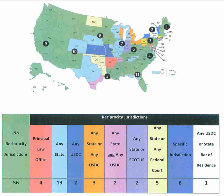Generally, a final ruling by a district court in either a civil or a criminal case can be appealed to the United States Court of Appeals in the federal judicial circuit in which the district court is located, except that some district court rulings involving patents and certain other specialized matters must be appealed instead to the United States Court of Appeals for the Federal Circuit, and in a very few cases the appeal may be taken directly to the United States Supreme Court.